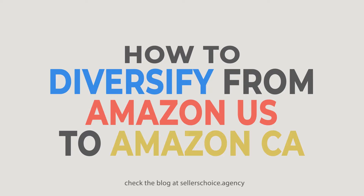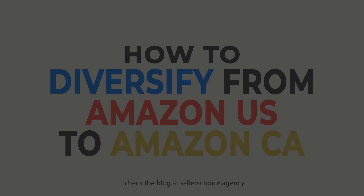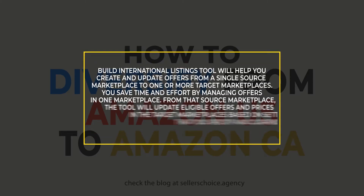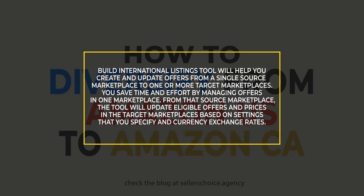The key tool that we'll be using on Amazon if you want to diversify your business is the Build International Listings Tool. This tool will help you create and update offers from a single source marketplace to one or more target marketplaces. You save time and effort by managing offers in one marketplace, and the tool will update eligible offers and prices in the target marketplaces based on settings that you specify and currency exchange rates.